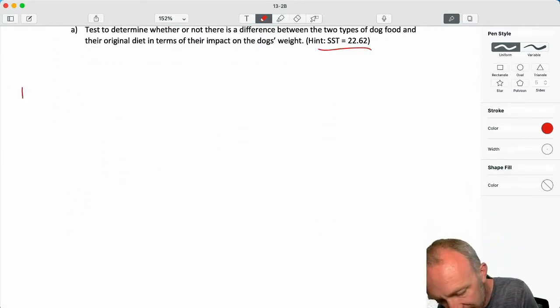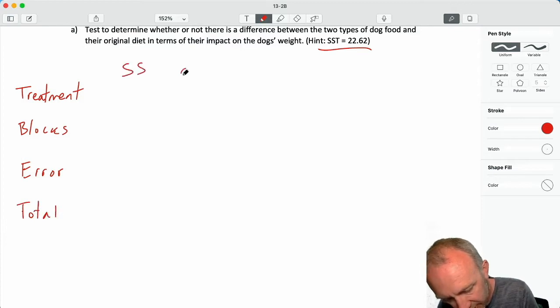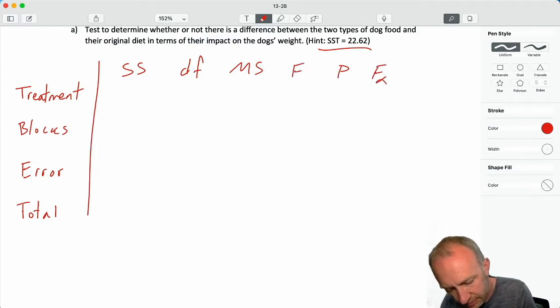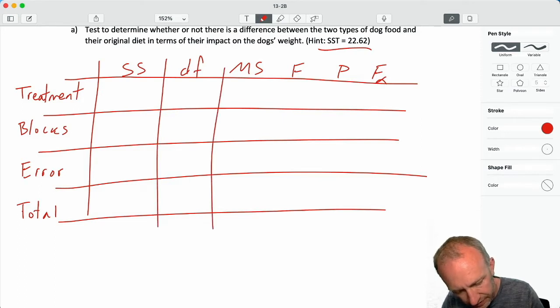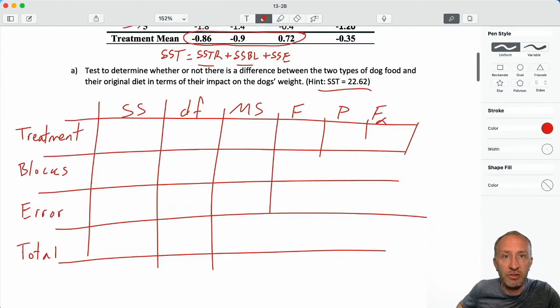Let's produce our ANOVA table where we are going to have treatments, blocks, error, and total. We have sums of squares, degrees of freedom, mean square, F, P, F critical, and as always we will begin in the top left corner, sums of squares treatments.